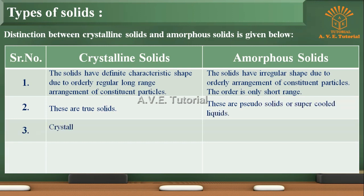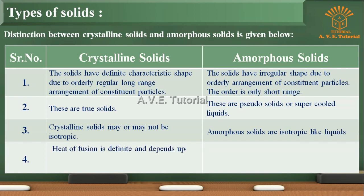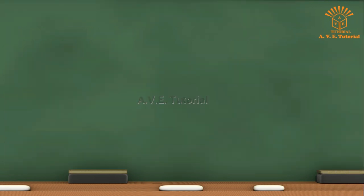Three: Crystalline solids may or may not be isotropic. Three: Amorphous solids are isotropic like liquids. Four: Heat of fusion is definite and depends upon arrangement of particles in the crystalline solids. Four: Heat of fusion is not definite.